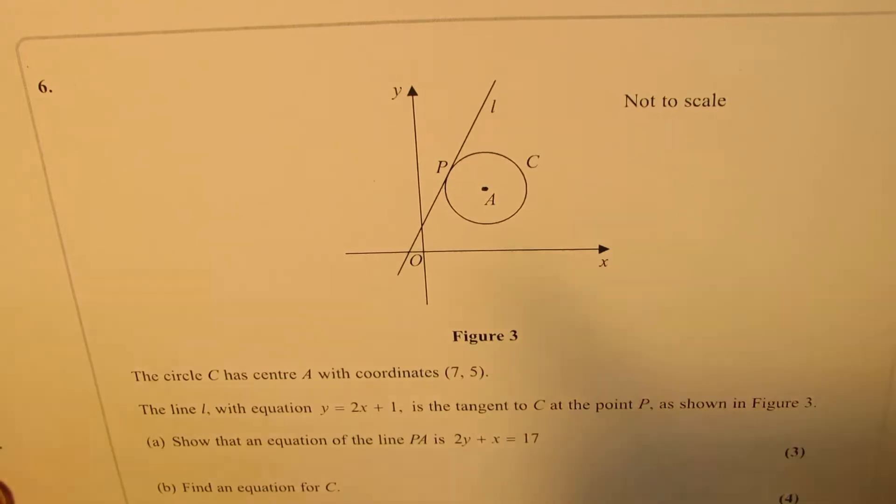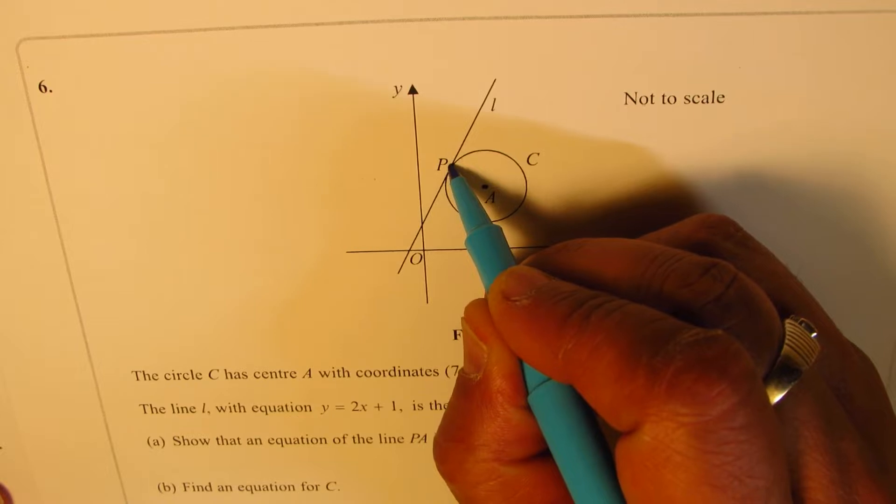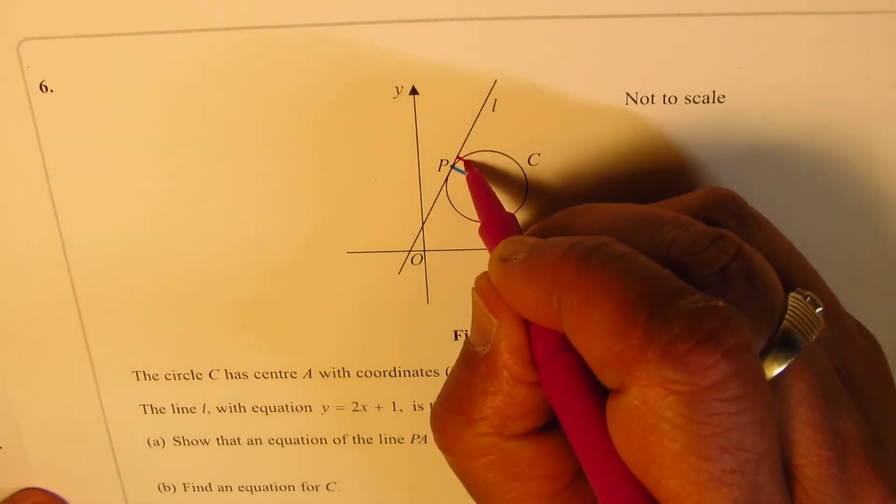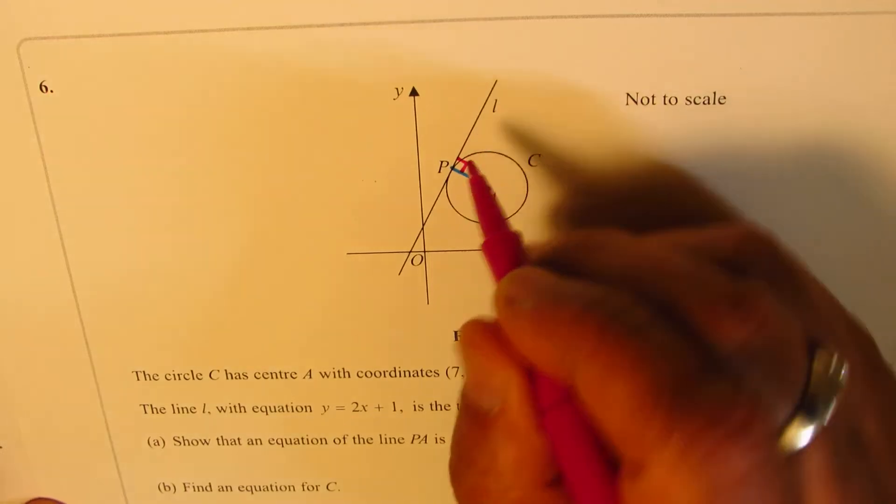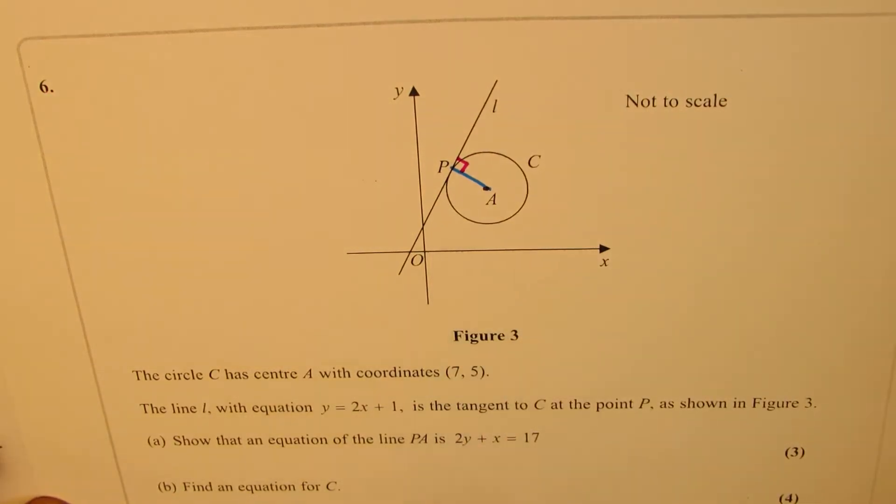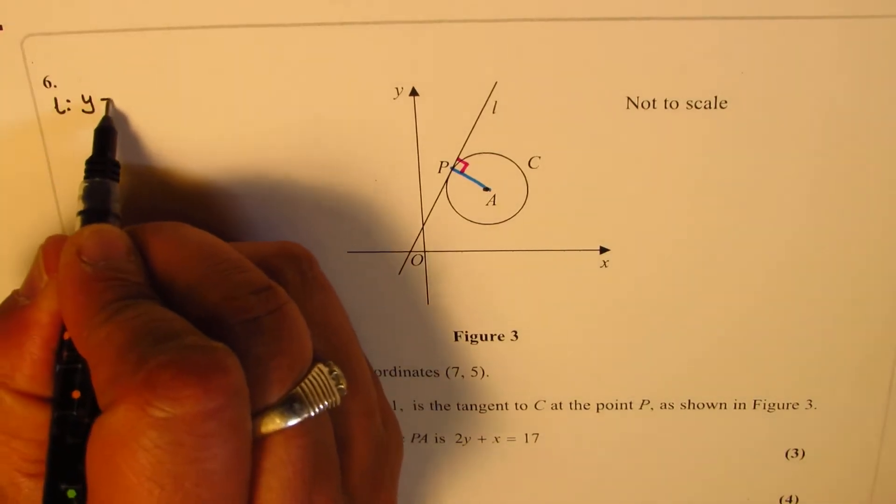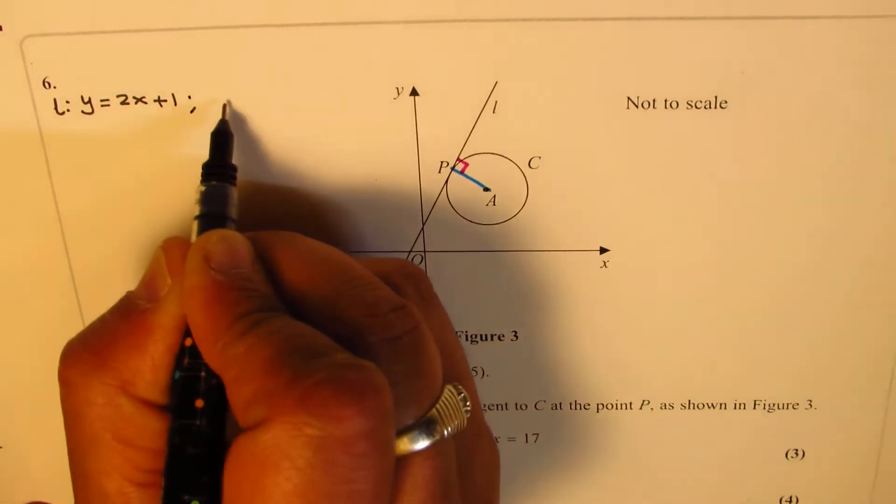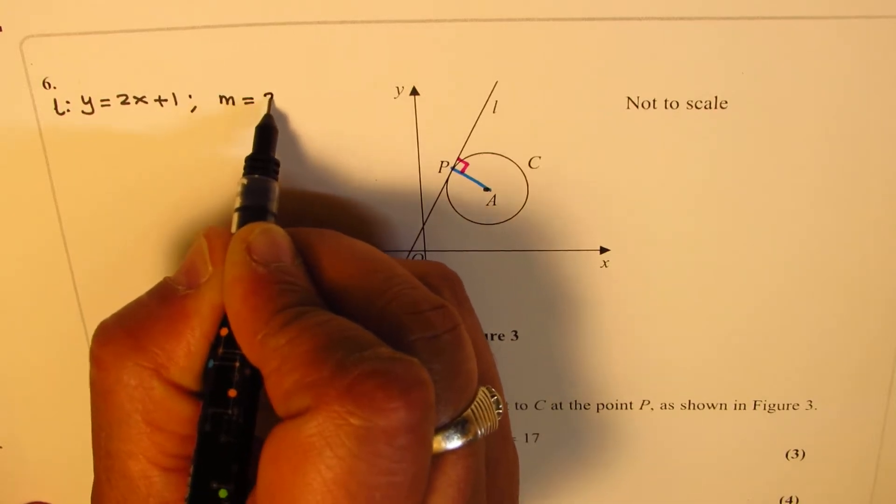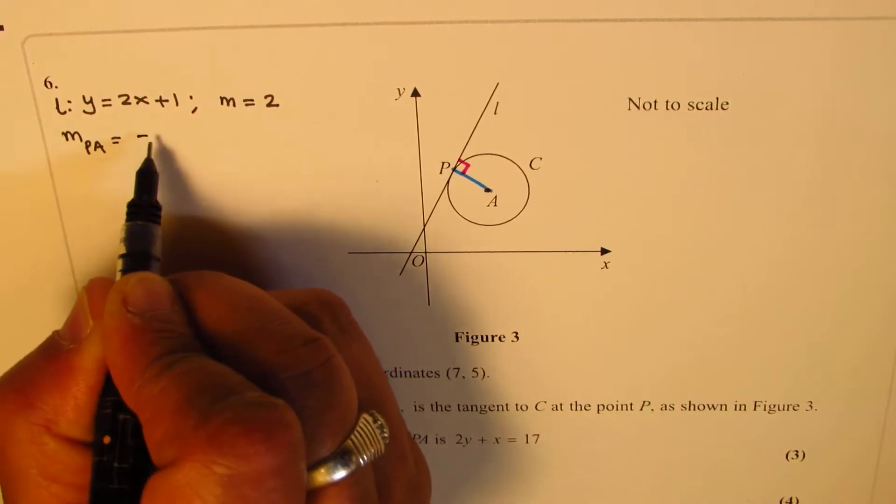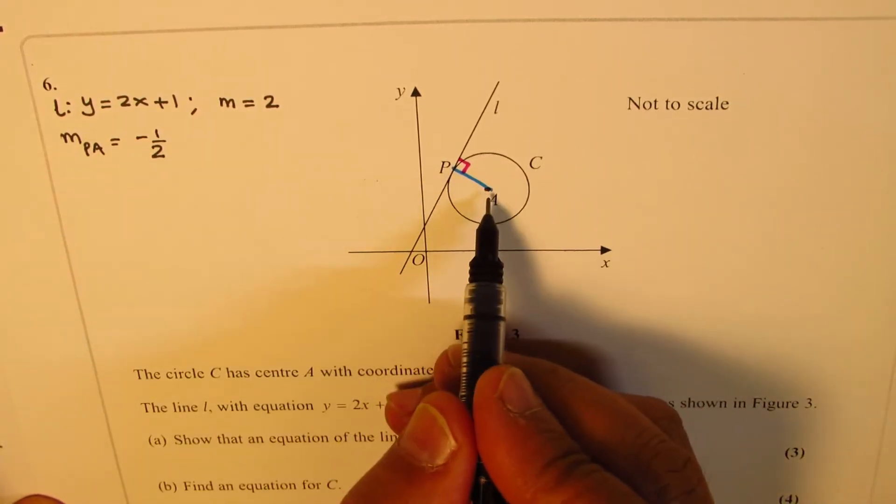We basically need to find the equation of this line, which is PA. And this line PA will be perpendicular to the tangent. PA is the radius, so it is perpendicular to the line L. That should help us.